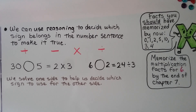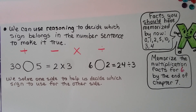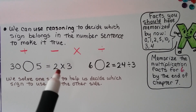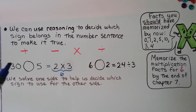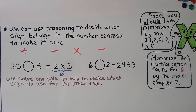We can use reasoning to decide which sign belongs in a number sentence to make it true — a plus sign, a minus sign, a multiplication sign, or a division sign. We solve one side to help us decide which sign to use for the other side. We don't know what sign belongs here, but it's going to equal whatever this side is, and 2 times 3 is equal to 6. That means this side needs to equal 6. 30 divided by 5 is equal to 6.